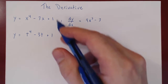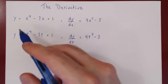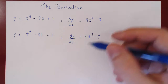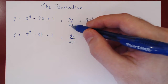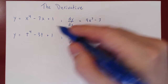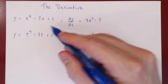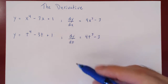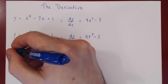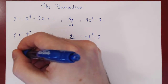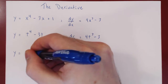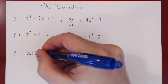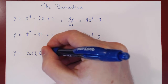Let's do a few other examples where we change the variable. Of course, we have to differentiate the function with respect to whatever variable the function is a function of. What if y is equal to cosine of e to the 2t?